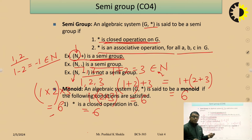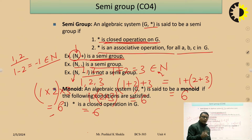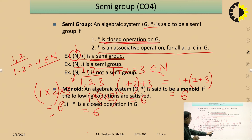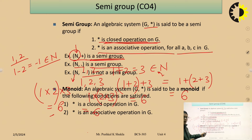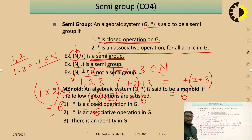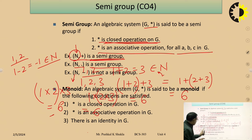Next concept: monoid. An algebraic system (G, star) is said to be a monoid if it follows these properties: first, star is a closure operation in G; second, star is an associative operation in G; and third, there exists an identity element in G. If all three conditions are satisfied, we can say the algebraic system is a monoid.